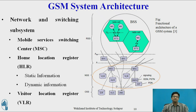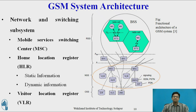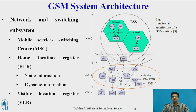HLR, the Home Location Register, is used to store user-relevant information — both static and dynamic. Static information consists of the mobile subscriber identity number, subscribed services, and International Mobile Subscriber Identity (IMSI). Dynamic information consists of the current location of the Mobile Station and the Mobile Subscriber Roaming Number (MSRN), which changes according to the roaming of the mobile station. HLR also supports charging and accounting.